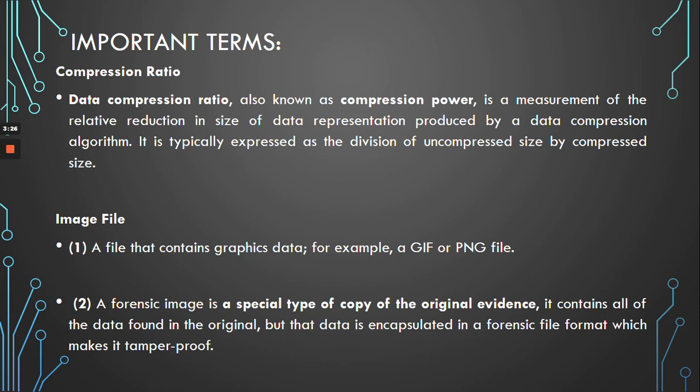An image file can mean a file that contains pictorial visualization or graphics — most of you know JPEG, GIF, and PNG files. But for digital forensics, we are going to be talking about a special type of copy of the original evidence, which means an image or the state of a disk, and it contains all of the data found in the original disk.